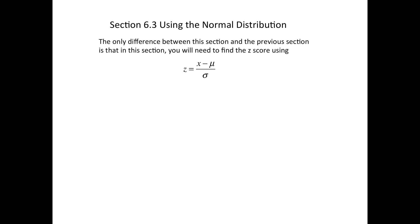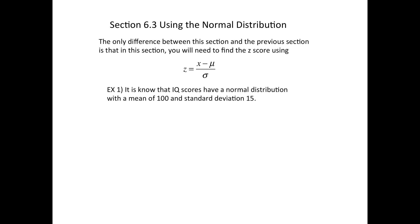I'm going to be using Table A2 again to calculate probabilities. The only difference between this section and the last is that we're going to be calculating our own z-values, given a mean and a standard deviation.